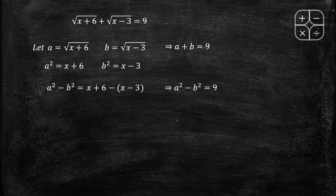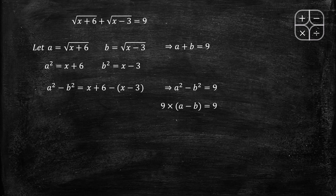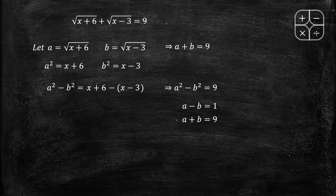a squared minus b squared equals 9. Factoring: (a plus b)(a minus b) equals 9. Since a plus b equals 9, we get 9 times (a minus b) equals 9, so a minus b equals 1.